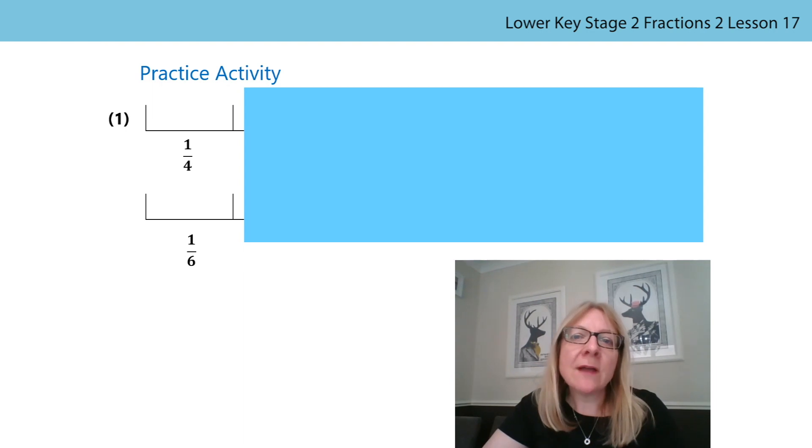For number one, did you have a go at drawing what the lines would look like? In this example, you can see that the parts are equal in length, but the top part represents one quarter of the whole and the bottom part represents one sixth of the whole. Because there are four equal parts in the top line and six equal parts in the bottom line, then the bottom line must be longer, like this.